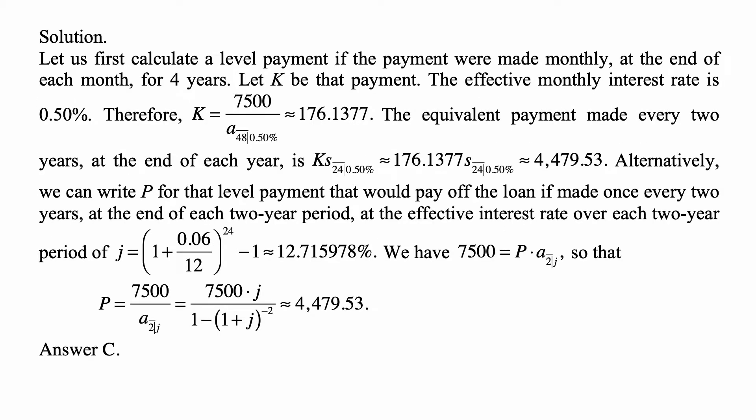Let's start by calculating a level payment if the payment were made monthly at the end of each month for four years. Let K be that payment.